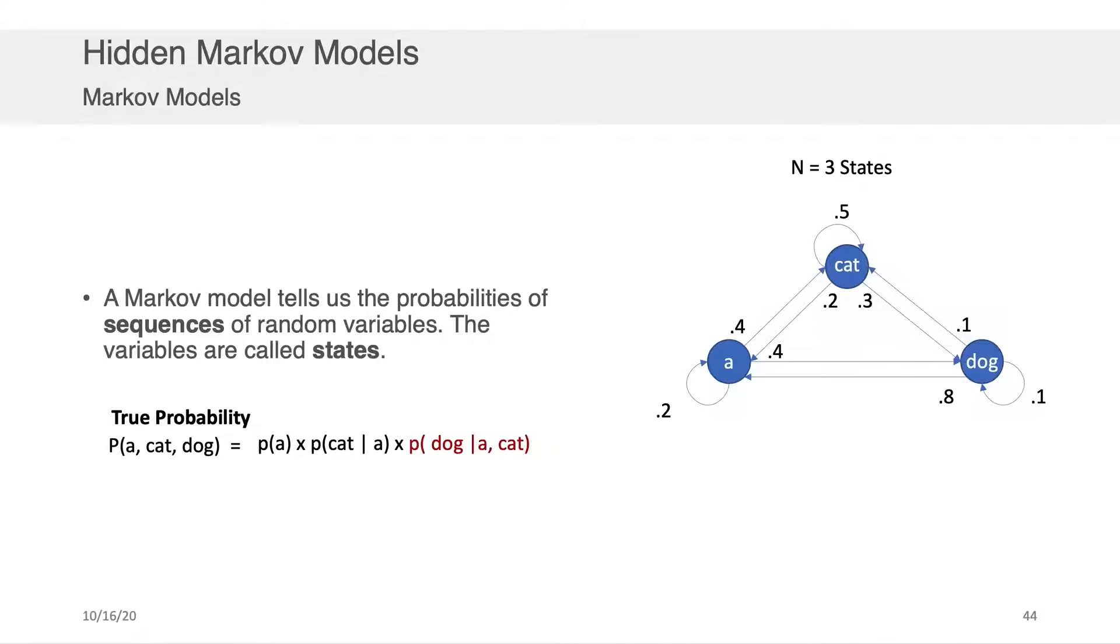Now I want to be clear that what the Markov model is generating for the probability of the sentence is not actually the real probability. Because the real probability, as we discussed during our Naive Bayes lecture, would include the probability of a times the probability of cat given a times the probability of dog given a and cat. But notice that here we made this simplifying assumption that the probability of the next token only ever depends on the previous token. That is exactly what the Markov assumption is. It basically slashes out the historical terms other than what happened in one time step before. That's what makes it a Markov model.